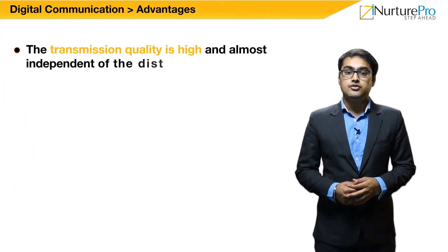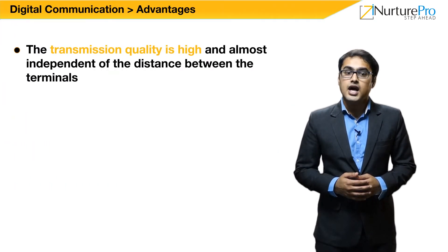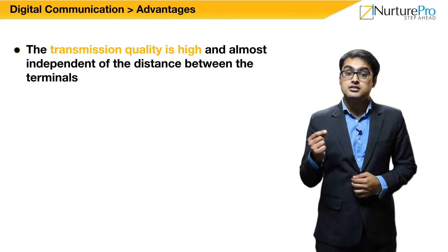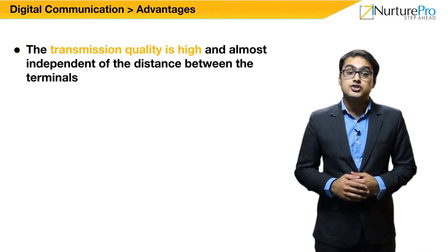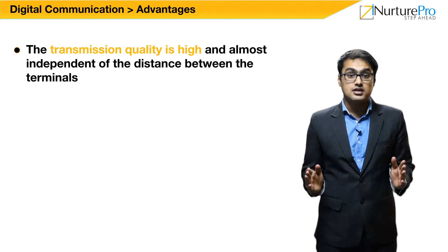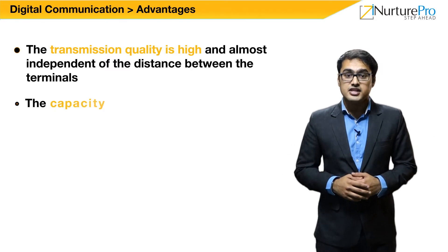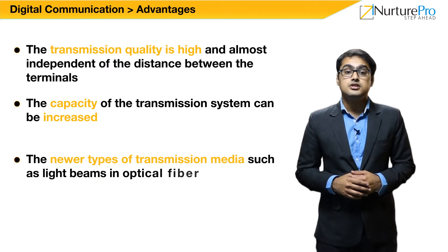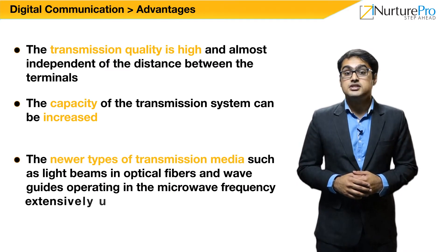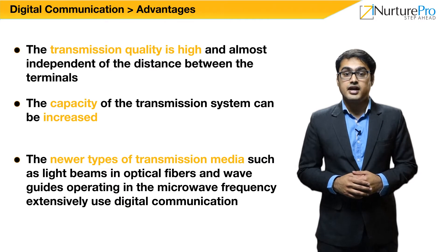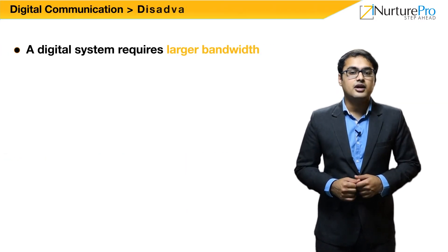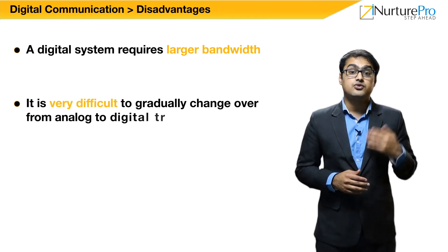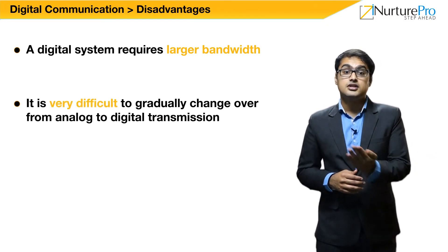A digital communication system offers many advantages that cannot be achieved with an analog system. The transmission quality in a digital communication system is very high and is almost independent of the distance between the source and the destination. The capacity of the transmission system can be increased, and it is used in newer types of transmission media such as optical fibers and waveguides. However, digital communication has disadvantages too: it requires a larger bandwidth, and it is very difficult to gradually change over from analog to digital transmission.